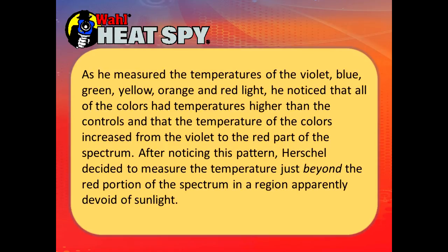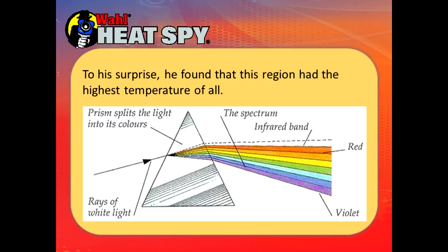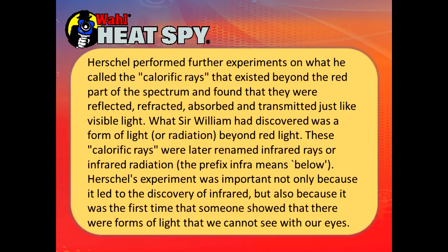After noticing this pattern, Herschel decided to measure the temperature just beyond the red portion of the spectrum in a region apparently devoid of sunlight. To his surprise, he found that this region had the highest temperature of all. He performed further experiments on what he called the 'calorific rays' that existed beyond the red part of the spectrum and found that they were reflected, refracted, absorbed, and transmitted just like visible light. What Sir William had discovered was a form of light or radiation beyond red light. These calorific rays were later renamed infrared rays or infrared radiation — the prefix 'infra' means below, so the technical term is 'below red.' Herschel's experiment was important not only because it led to the discovery of infrared, but because it was the first time someone showed that there were forms of light that we cannot see with our eyes.